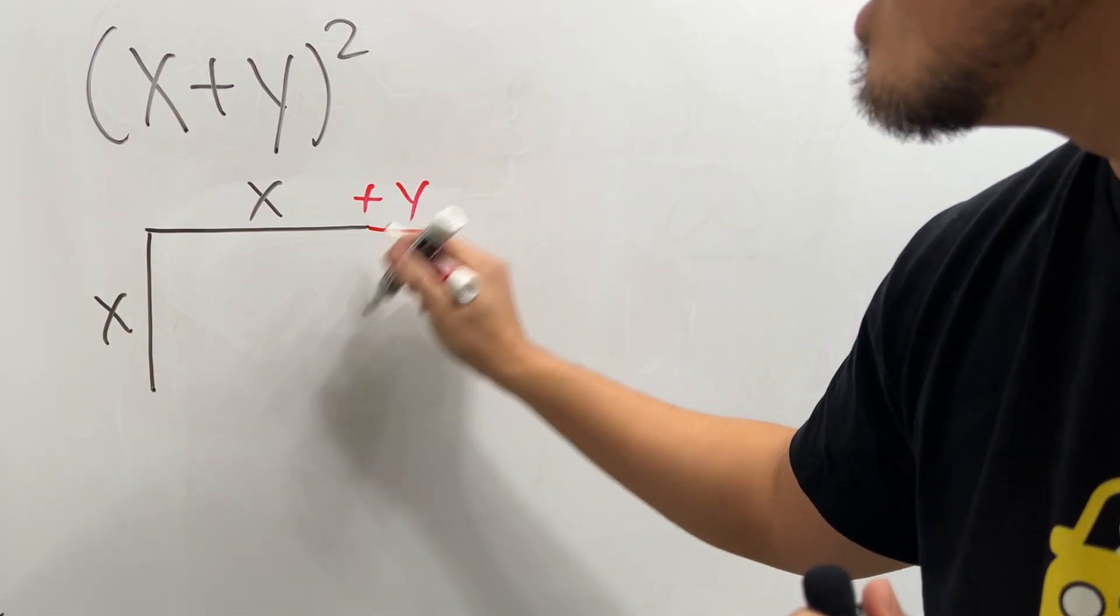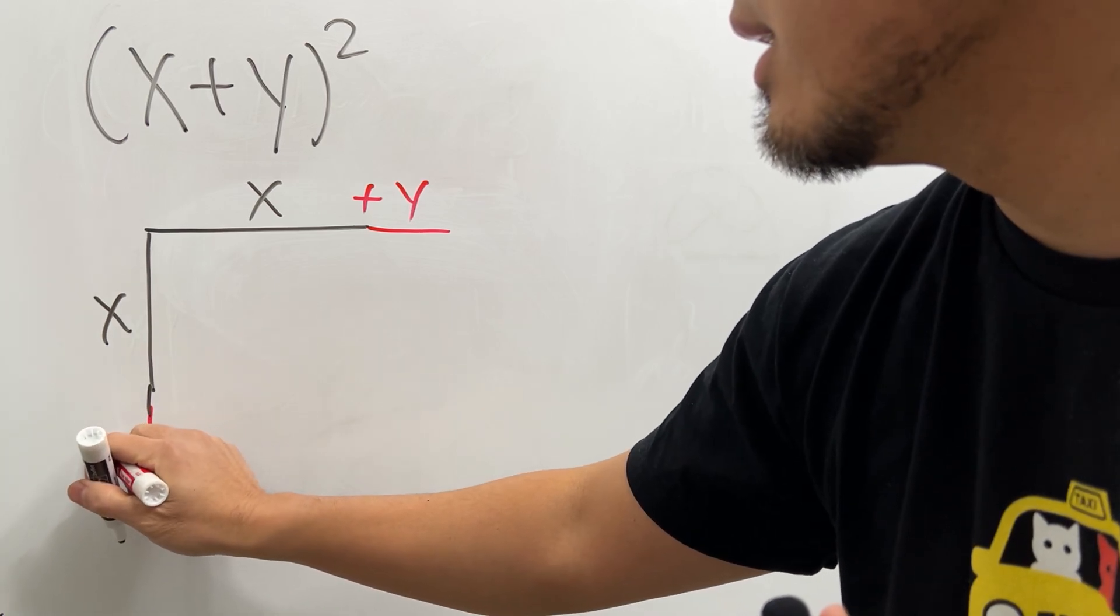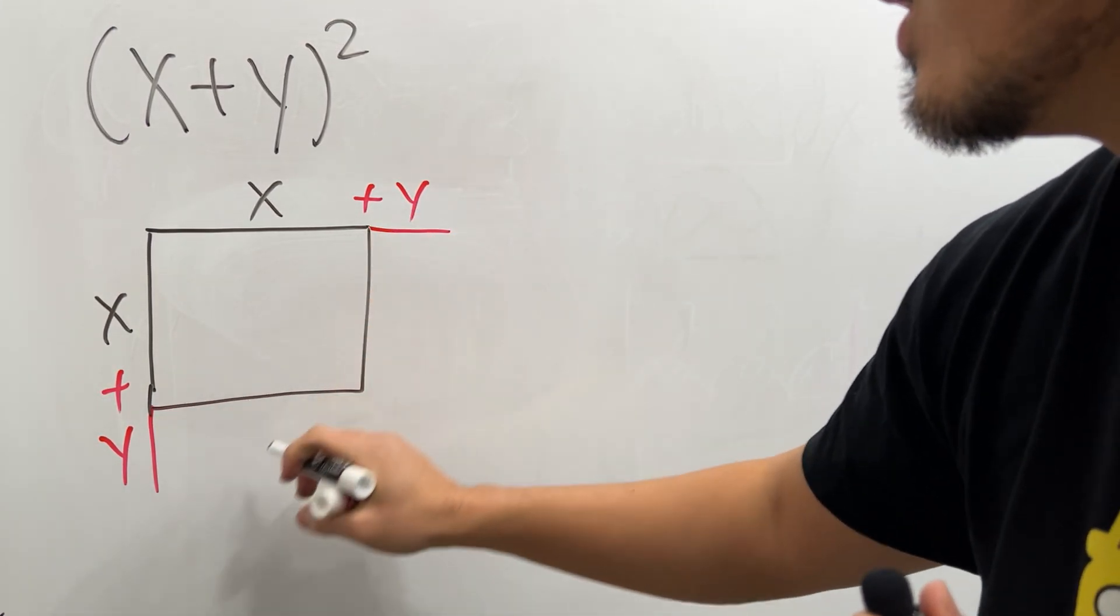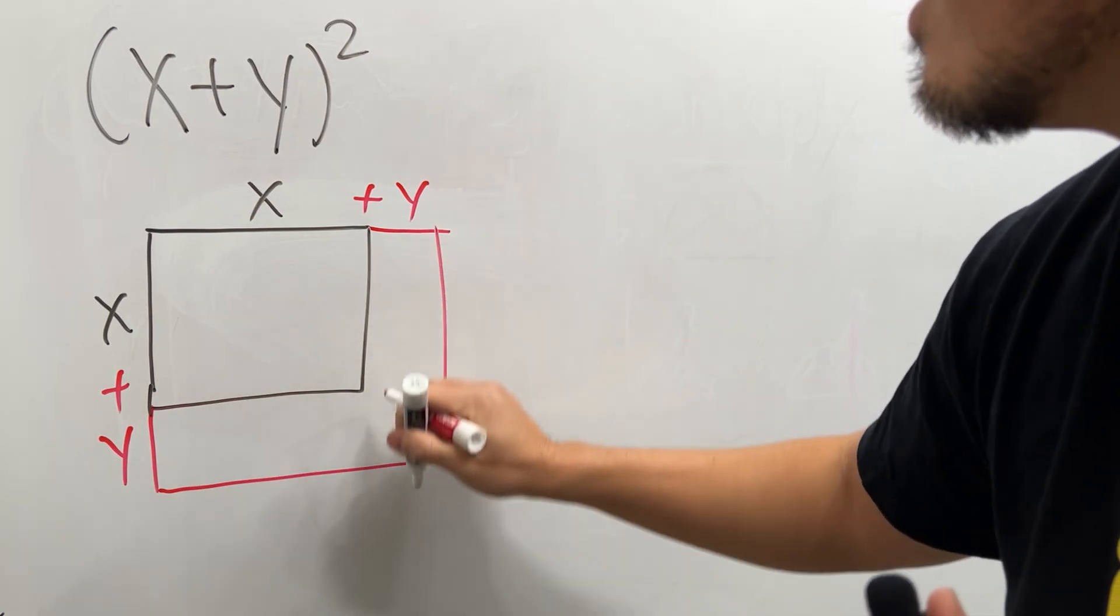This is x, and then again here we have the y. So again here is going to be x plus y as well. And now let's go ahead and make the square here and also here, and then that's going to find the area.